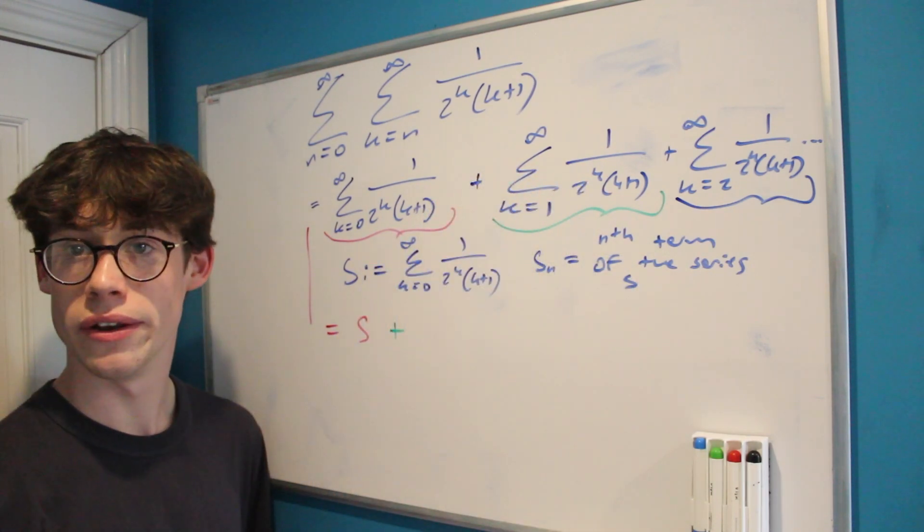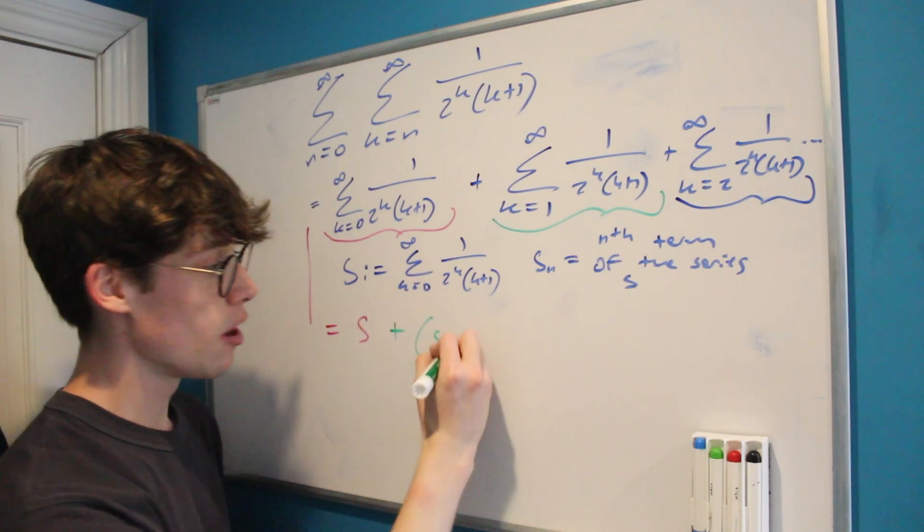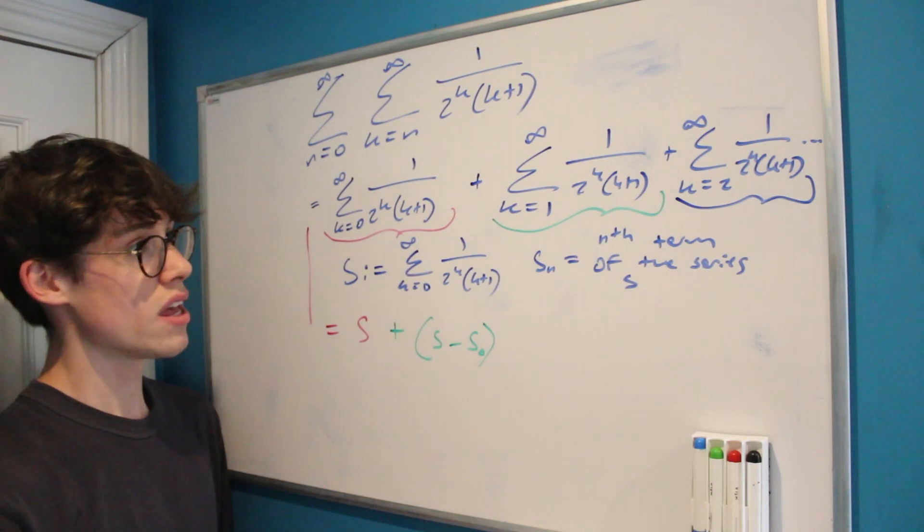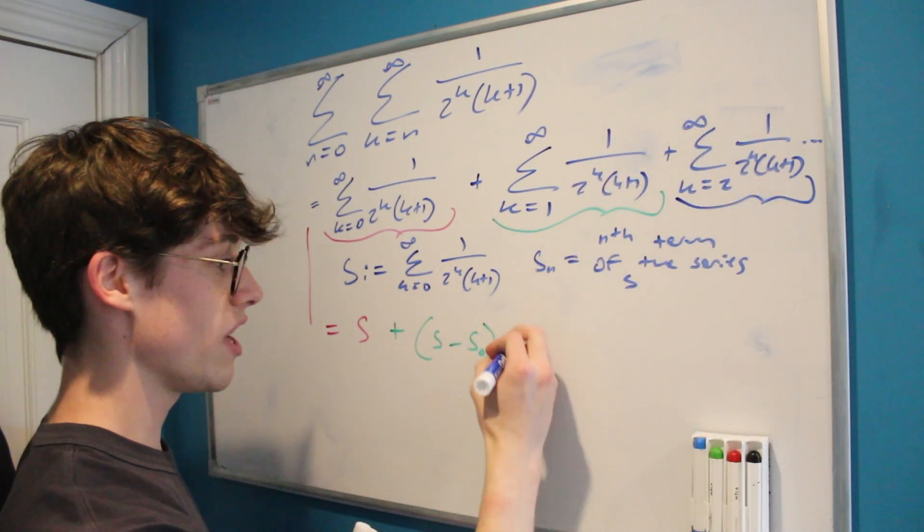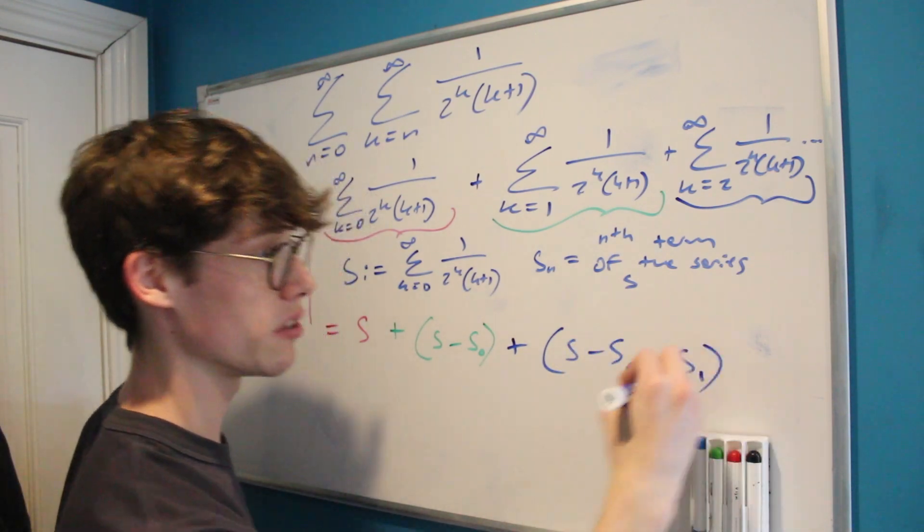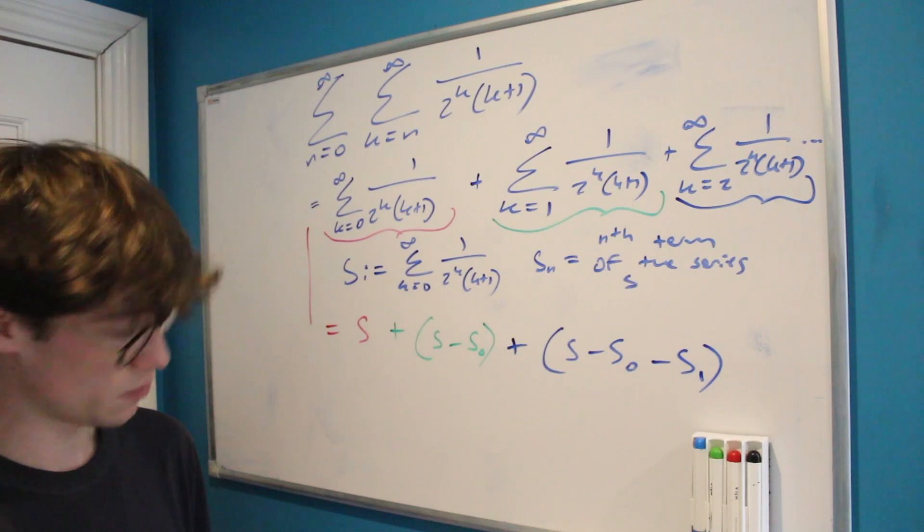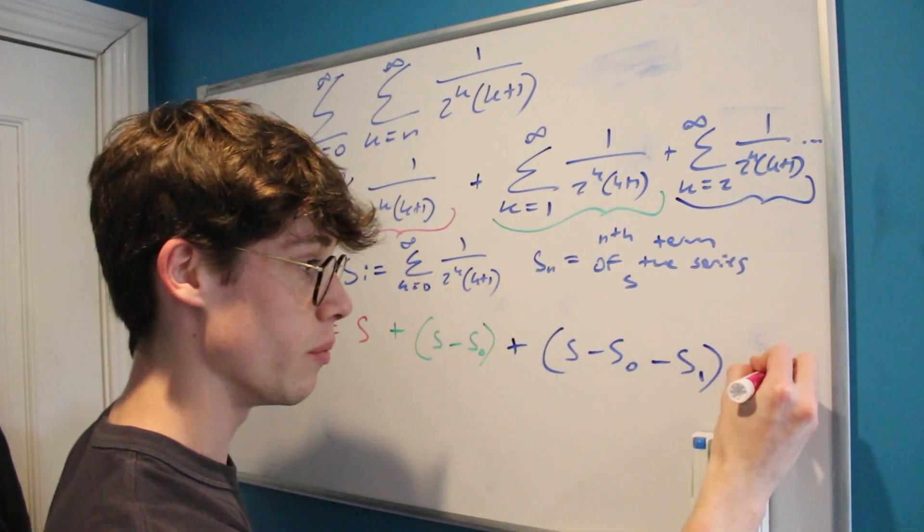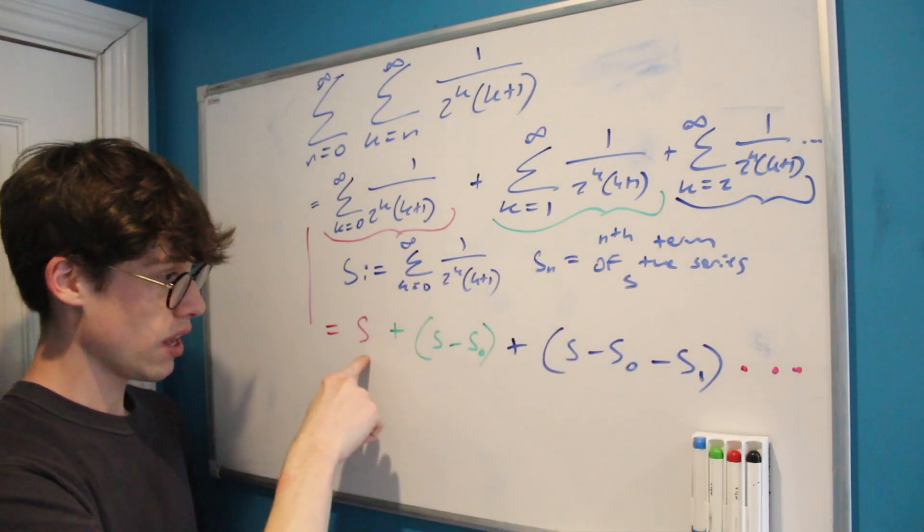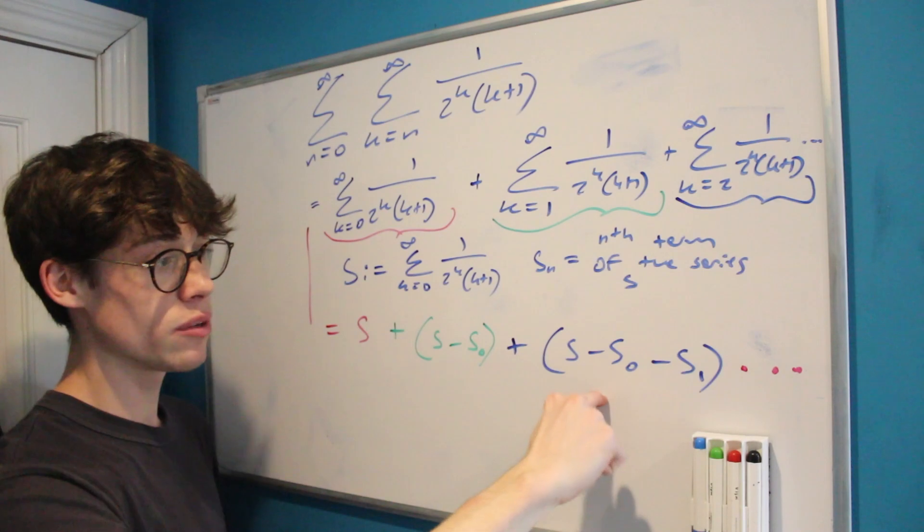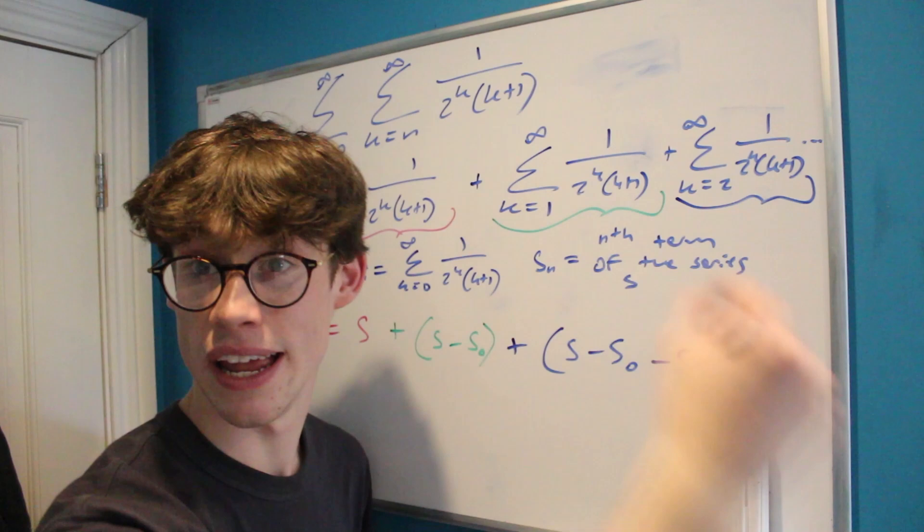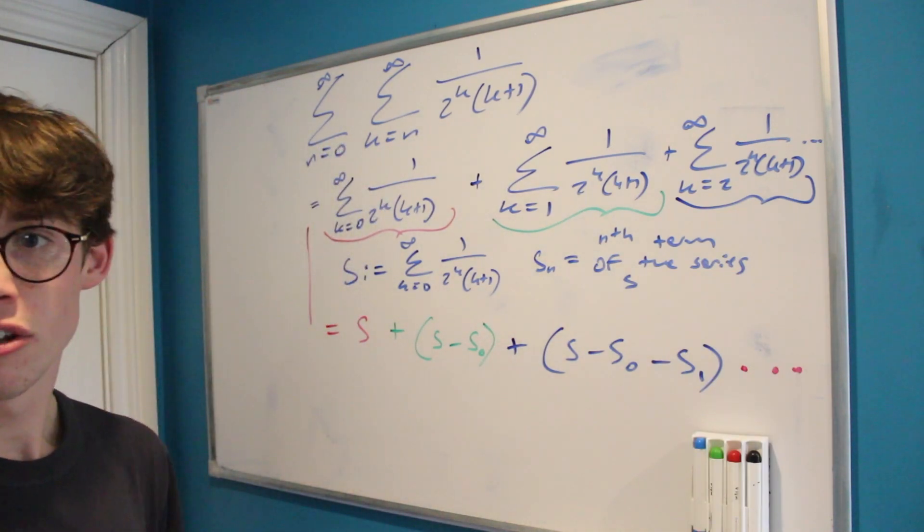So it's s but without that term that starts at 0. And again, when we look at this sum over here, this is also s but without the term that starts at 0 and without the term that starts at 1, because we want to start at 2. And you might see the pattern that's starting to emerge: it's that we're adding s each time and we're subtracting s_0 here, and then we're subtracting s_0 and s_1 here, and on the next one we would be subtracting s_0, s_1, and s_2. So we're getting somewhere, but I'm not quite satisfied yet.